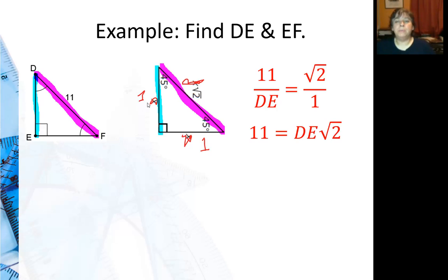Go ahead and cross multiply. Now you're going to get DE times square root of two. That's okay. You can divide both sides by square root of two. So your answer is eleven over square root of two. And it's going to be the same for both legs because the legs are congruent.